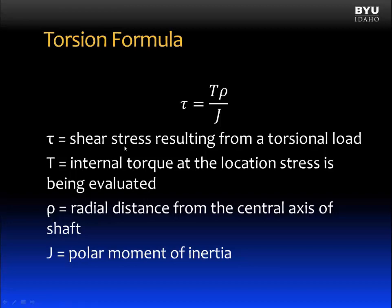Let's define these terms. Tau is the shear stress resulting from a torsional load. T is the internal torque at the location the stress is being evaluated. Rho is the radial distance from the central axis of the shaft. And J is the polar moment of inertia.